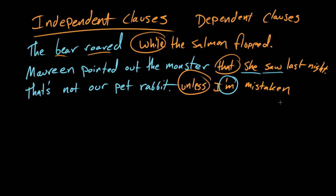So the presence of this subordinating conjunction unless makes this into a dependent clause. So unless means it's kind of hinging on some other information. So the other information is, that's not our pet rabbit, unless I'm mistaken. I feel that there should be a comma here, so I'm gonna put one in. That's not our pet rabbit, unless I'm mistaken.